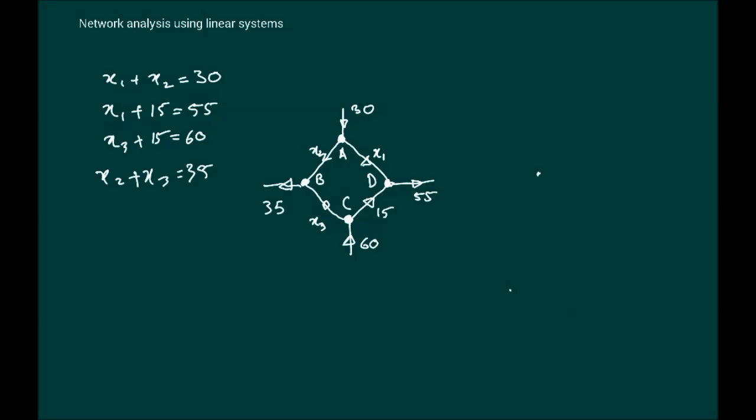This is a very easy system. Clearly we can identify the value of X1 very quickly from this equation here. This tells us that X1 is clearly 40, and this one here tells us that X3 is 45. We already know X1 and X3. We can substitute X1 equals 40 into this equation, and that tells us that X2 is minus 10.